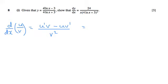So u is the top and v is the bottom, so we're going to differentiate the top and times it by the bottom. When we differentiate 4 ln x, we're going to get 4 over x. And when we differentiate minus 3, we're going to get 0. So we've got 4 over x times by the bottom, which is 4 ln x plus 3.